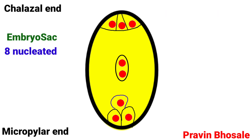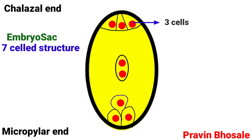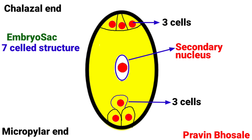The embryo sac is eight-nucleated: three nuclei at the chalazal end, three nuclei at the micropylar end, and two nuclei in the center. The embryo sac is a seven-celled structure: three cells at the chalazal end, three cells at the micropylar end, and one secondary nucleus formed by the fusion of two polar nuclei.